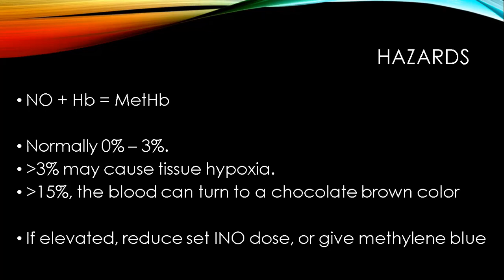We want to keep an eye on methemoglobin levels, and we do that through a blood sample analyzed by a blood gas analyzer, which can give you methemoglobin and carboxyhemoglobin values. Where I work, we measure that every eight hours and try to keep methemoglobin less than 5%. If it is high, you can reduce the INO dose or give methylene blue to bring those values down.